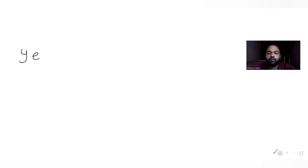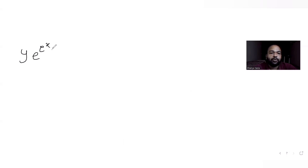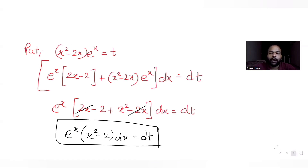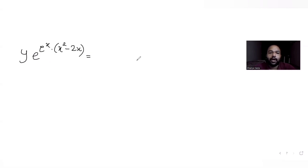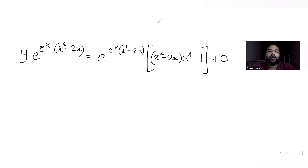Re-substituting t = e^x·(x²−2x), the full solution is: y·e^(e^x(x²−2x)) = e^(e^x(x²−2x))·(e^x(x²−2x) − 1) + c.